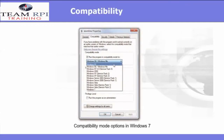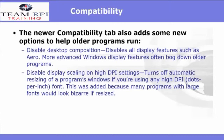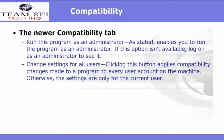Here you can see that you can select all the way back to Windows 95, Windows 98, and Windows ME, all the way to the more recent Windows 7. The newer Compatibility tab also adds some new options: you have the option to disable desktop composition and disable display scaling on high DPI settings. This was primarily added because many programs with large fonts would look really bizarre if resized. Here you'll also find the ability to run the program as the administrator and change settings for all users. This button applies compatibility changes made to the program to every user account on the machine; otherwise, the settings are only for the current user.